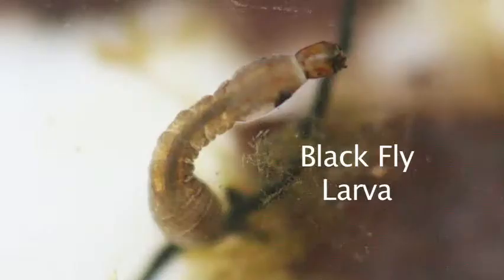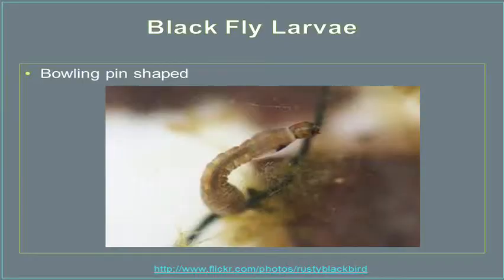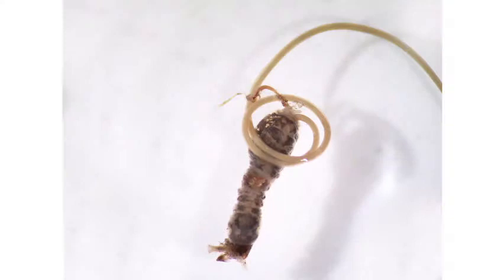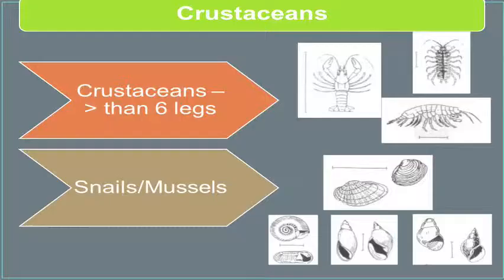Black fly larvae are another type of dipteran found in the aquatic world. Black flies are kind of bowling pin-shaped and have a tendency to adhere themselves to the side of your tray. Once you get things in there and let them settle down, if you find something that's planted its bottom on the side of your tray and is waving around in the water, you've probably got a black fly. Look closely and you'll see that bowling pin shape, and you may also see two furry-looking ears coming out the top.